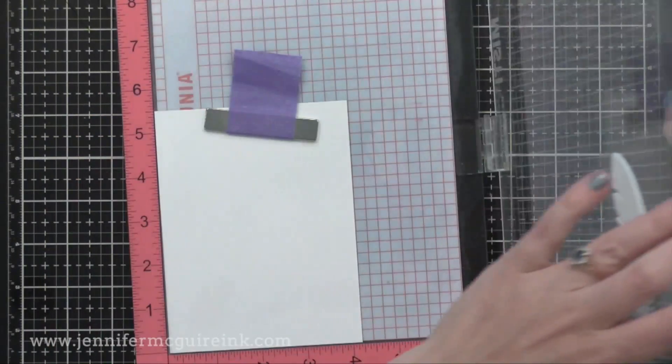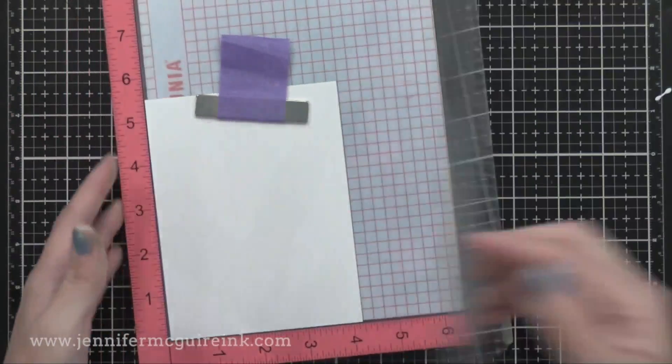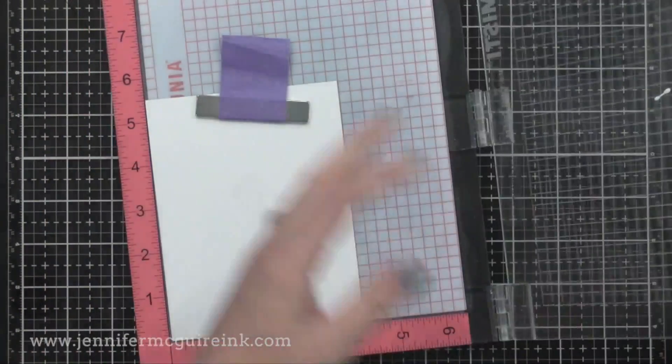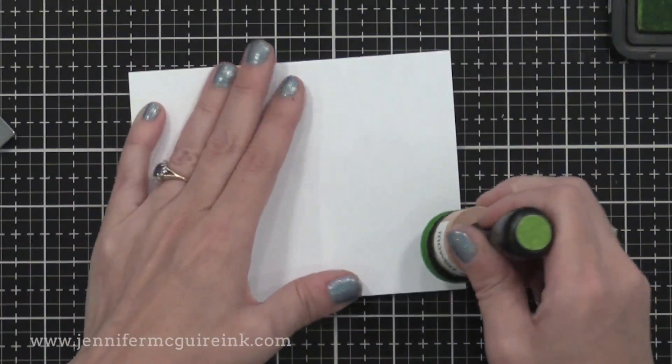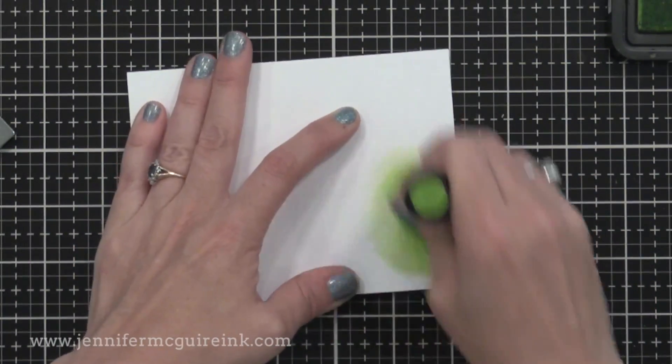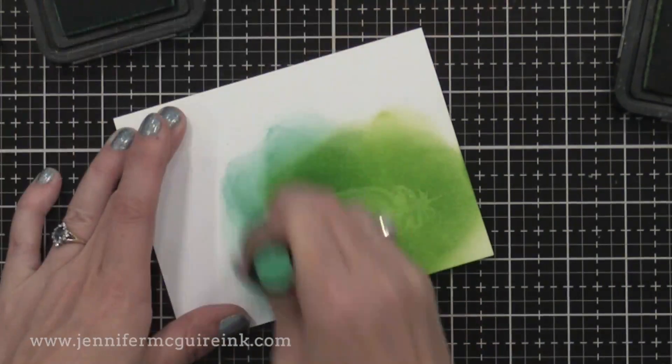I'm inking it up with Versamark ink and stamping this onto white card stock. Now this technique does work best with more solid images, since this is very subtle or for background images. I double stamped it just to make it a little more obvious. Now that Versamark ink will disappear, but you do want to heat set it.